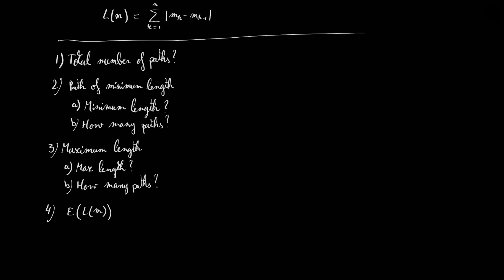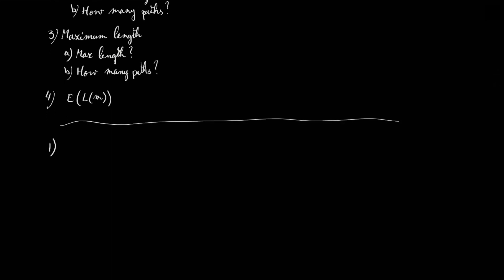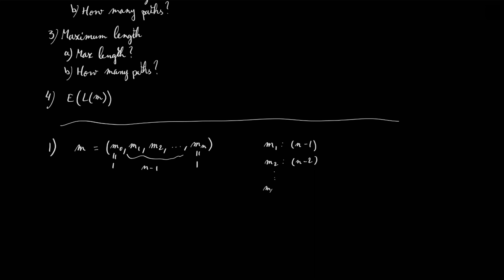To answer the first question, let's go back to the way we write a path m as a finite series m0, m1, m2, etc., up to mn. The number m0 has to be 1, where the mailman starts by leaving his bike, and he returns to house number 1 at the end. There are exactly n-1 houses the mailman has to visit in between. For m1, the mailman can visit n-1 different houses; for m2, the number of possibilities decreases to n-2, and so on, until mn-1, where there is only 1 possibility. So the total number of paths is (n-1)(n-2)···1, which is exactly (n-1) factorial.